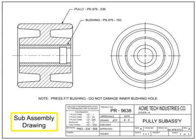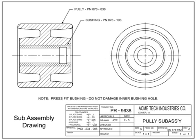Sub-assembly drawings are made of two or more separable items that join to form a sub-assembly that is then used on a higher-level assembly. Sub-assembly drawings are useful for smaller assemblies that may go on multiple end products, such as a hydraulic valve that goes on many different tractors. One of the differences between an assembly and sub-assembly is that a sub-assembly typically has the use-on or next-higher assembly called out, either in the title block or in the notes section.